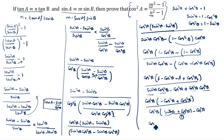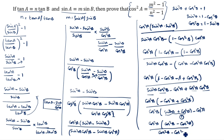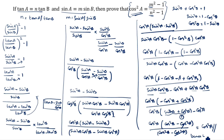We write cos square a times (cos square b minus cos square a) divided by cos square b times (cos square b minus cos square a). Cos square b minus cos square a cancels, giving cos square a. This equals cos square a, which is the answer. LHS equals RHS. Hence proved. This is the first method.